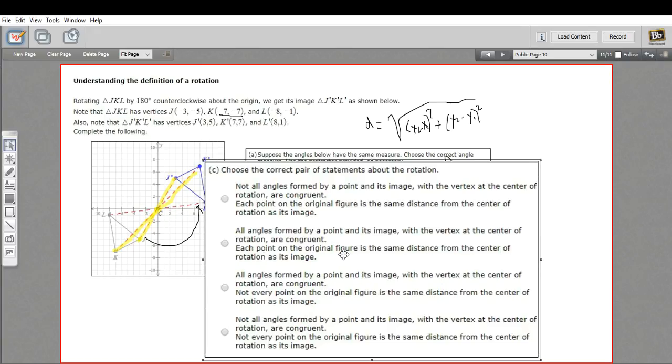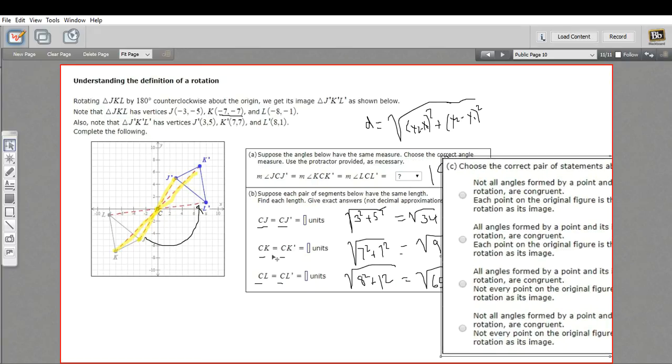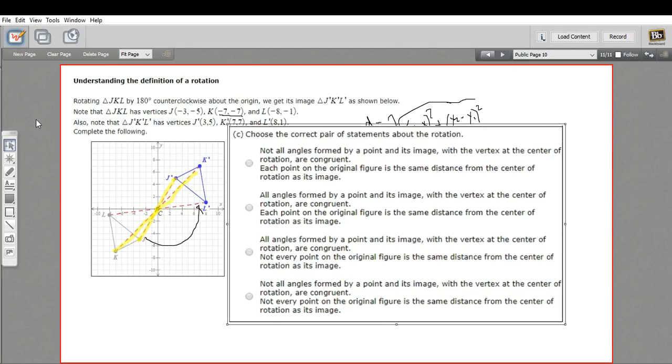each point on the original figure is the same distance from the center of rotation as its image. And that is saying that this is equal to this. This is equal to this. This is equal to this. That's exactly what we found. So number two is going to be our correct answer.